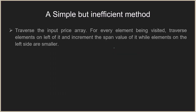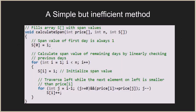Let's look at the first solution — a simple brute force method, which is inefficient. What we do is traverse the input price array and for every element being visited, traverse the elements to its left and increment the span value while those elements are smaller. We start from the current element, go left, and keep incrementing the span until we encounter a larger element. The calculate span method takes the price array, the size of the array, and the span array as arguments.